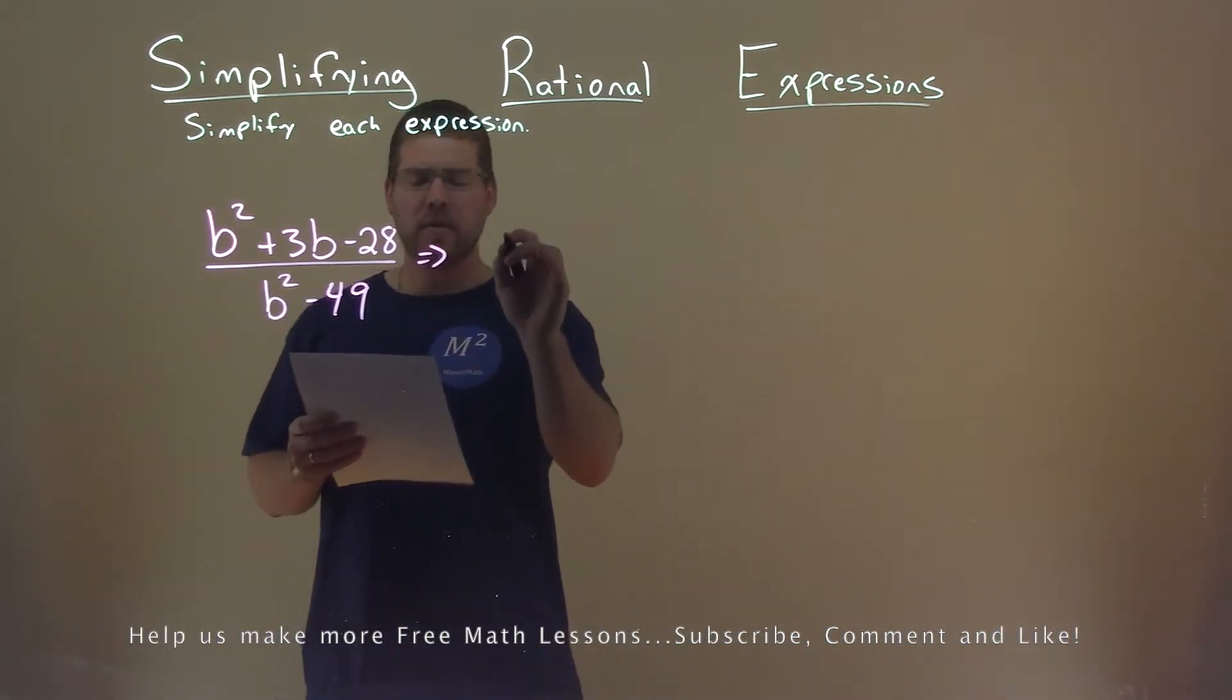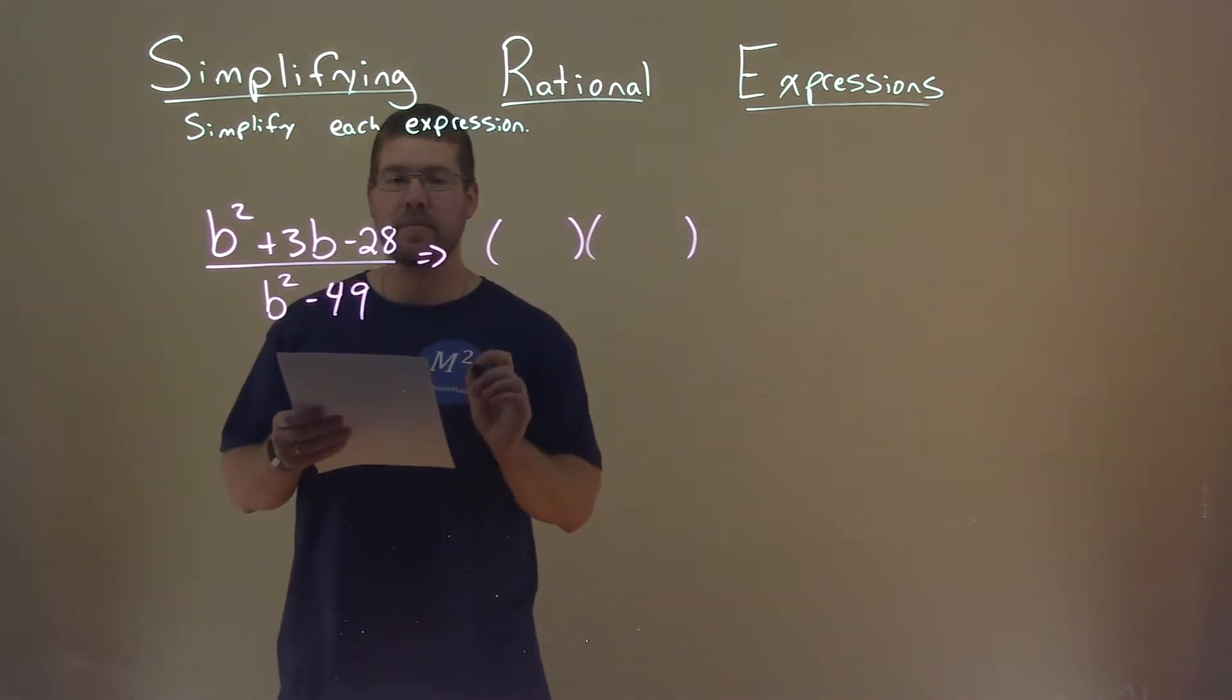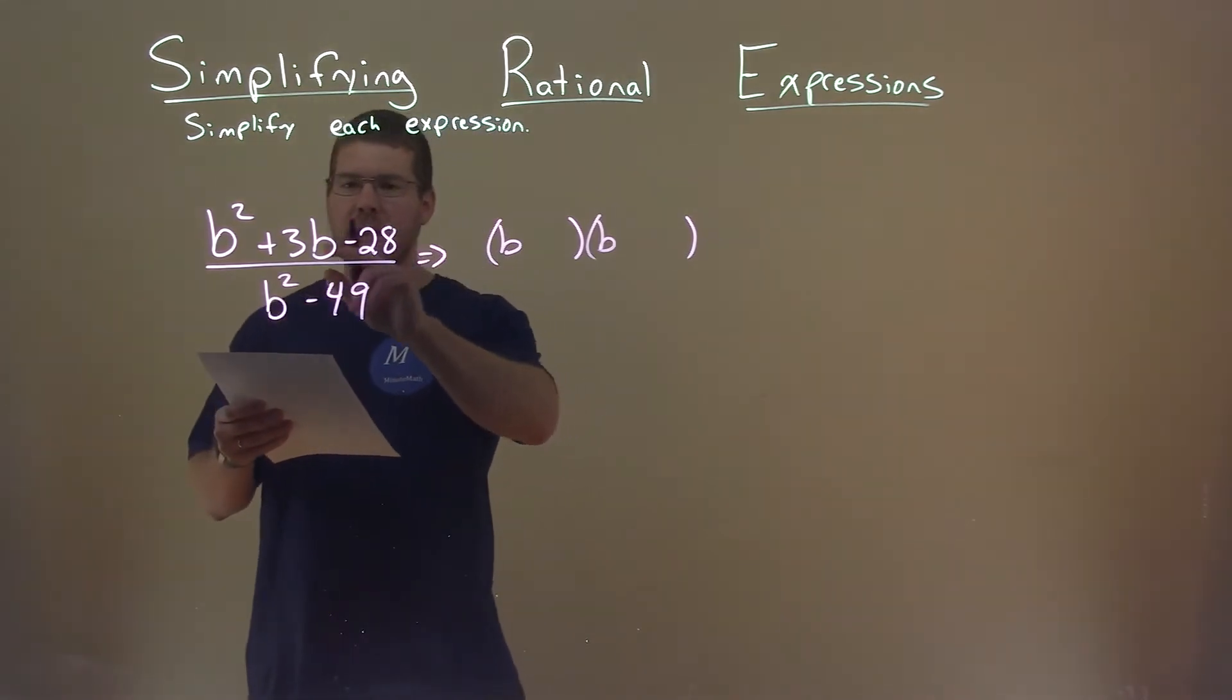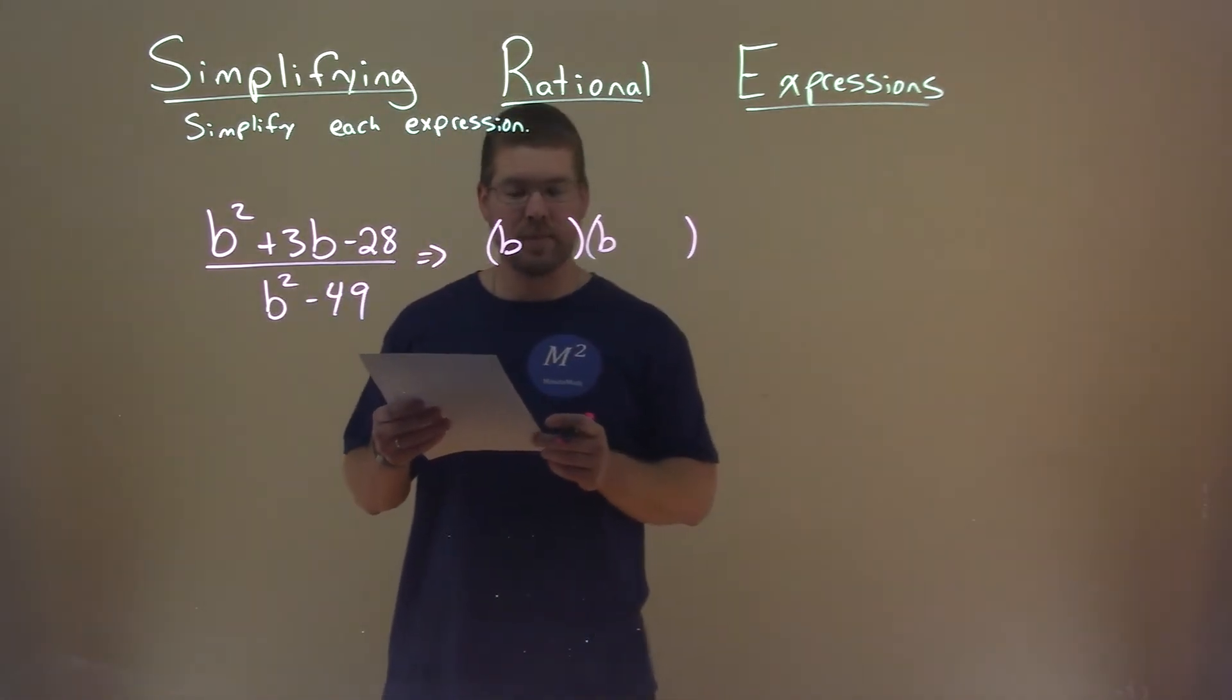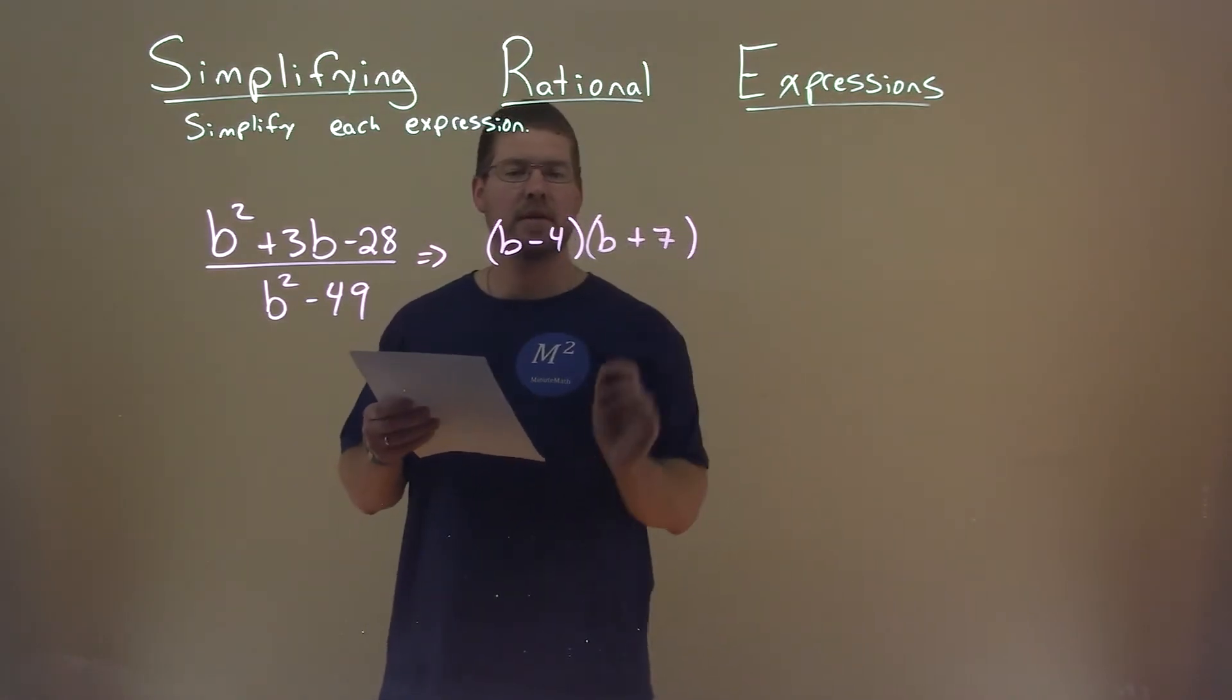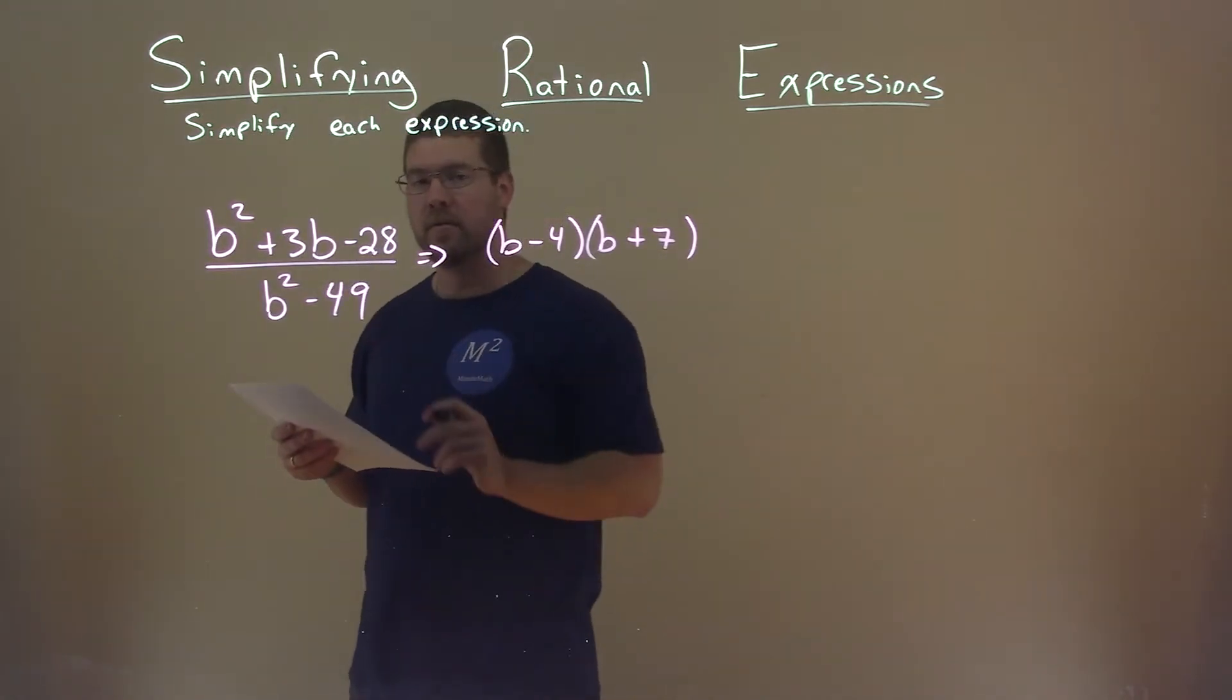Well, the numerator looks like it factors fairly easily. So how can we factor this? We ask ourselves what two numbers multiply to be negative 28 but add to be a positive 3. And those numbers are a negative 4 and a positive 7. 7 times negative 4 is a negative 28. We add the 2, we get a positive 3.